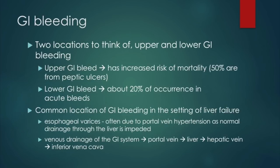Moving to GI bleeding: there are two locations — upper GI and lower GI. Upper GI bleeds have an increased risk of mortality, and 50% are from peptic ulcers. Lower GI bleeds are about 20% of acute bleeds and are not as serious. In the setting of liver failure, a common location of GI bleed is esophageal varices, due to portal vein hypertension as normal drainage through the liver is impeded.